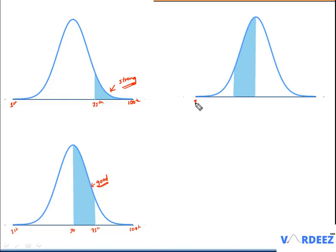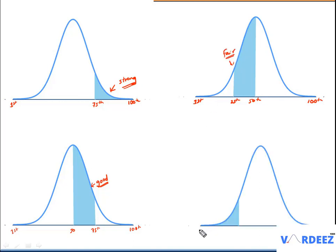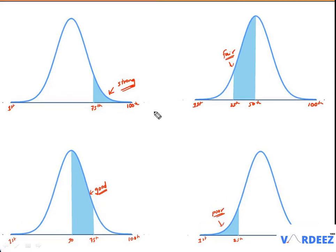And if you see something like this on the result, then you are from the 25th percentile to the 50th percentile, and this reflects a fair understanding of the particular subject. And if you see something like this, then this reflects that you are in the least preferred zone and this reflects a poor understanding of the subject. Now if you already have the results, you can see for yourself what is your strong area and what areas you need to focus on.